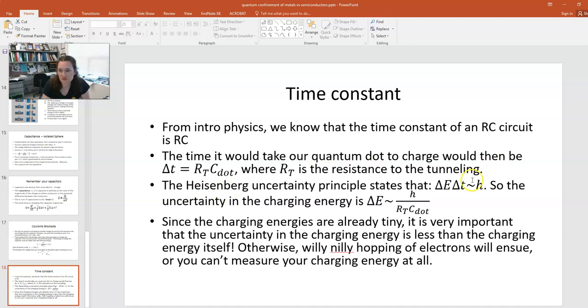Now, if you plug that into your Heisenberg uncertainty principle, delta E delta T is approximately Planck's constant. So the uncertainty in the charging energy, if you've got delta T as R_T times C_dot, then delta E would be approximately equal to Planck's constant divided by R_T C_dot. Now your charging energies are already teeny-weeny. It's very tiny, so it's very important that the uncertainty in the charging energy is less than the charging energy itself. So that's another thing that you have to think about when you're designing these single electron transistors.